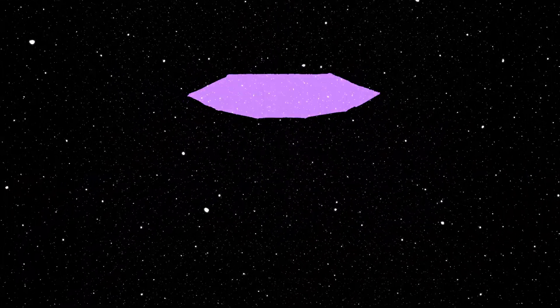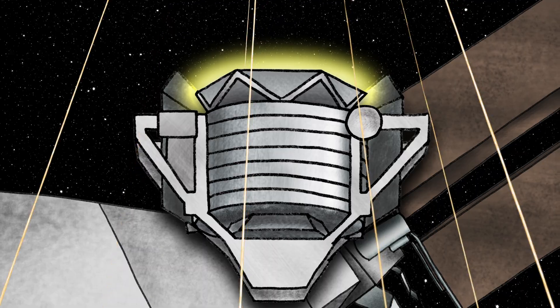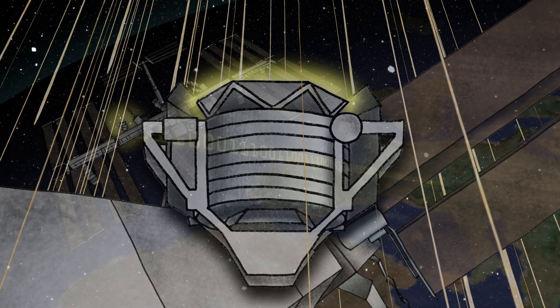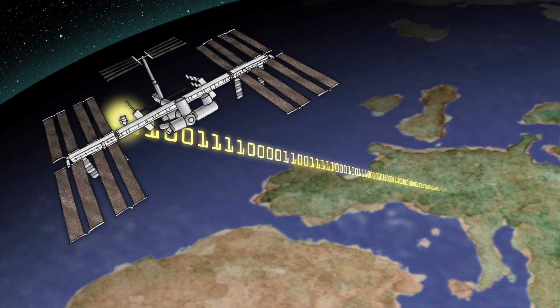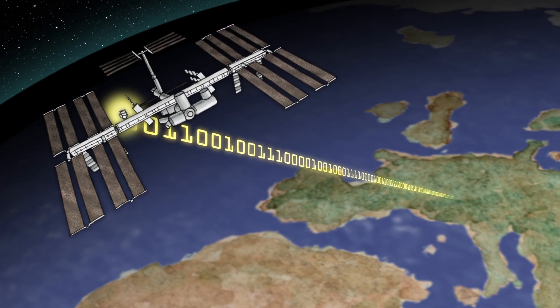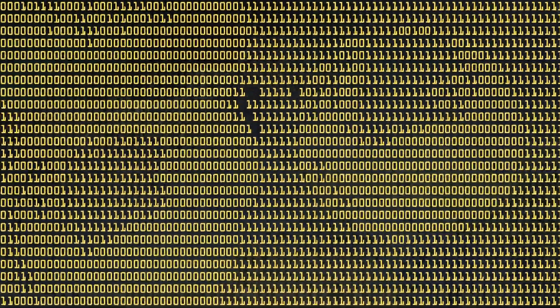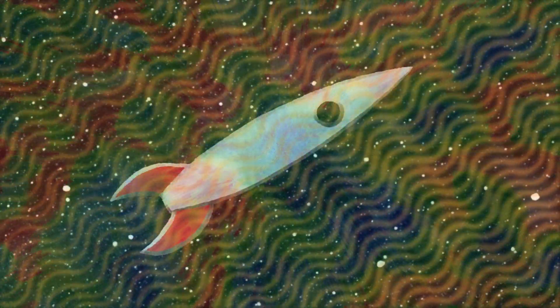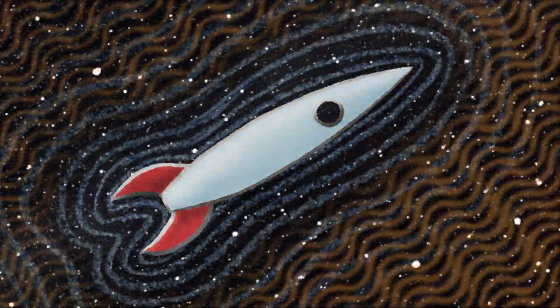The Alpha Magnetic Spectrometer is currently measuring 50 million particles per day, with information about each particle being sent in real time from the space station to the AMS control room at CERN. Over the upcoming months and years, it's expected to yield both amazing and useful information about antimatter, the possible existence of dark matter, and even possible ways to mitigate the effects of cosmic radiation on space travel.